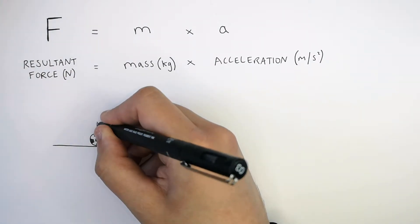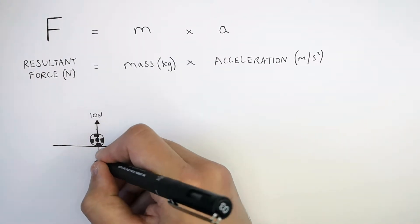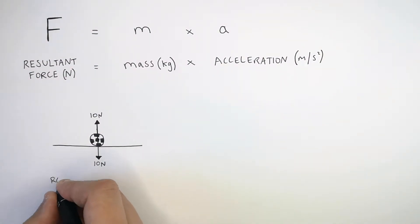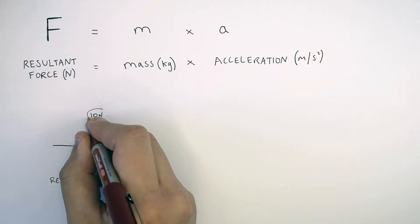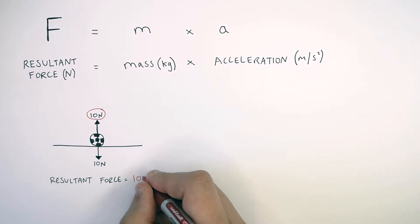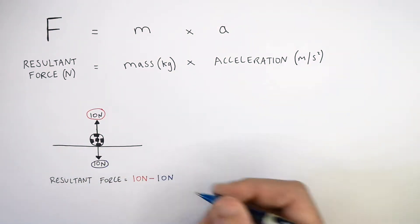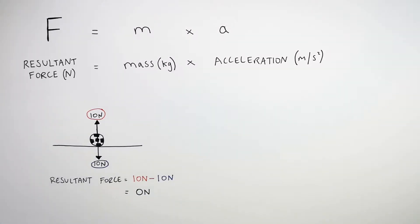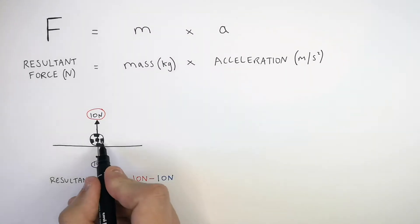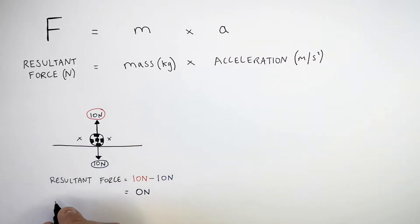The normal contact force on the ball is equal to the weight on the ground, so we can work out the resultant force. The resultant force is 10 newtons minus 10 newtons, which is 0 newtons. Because no forces are being applied to the ball in either direction, the ball is currently stationary.